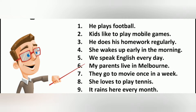Example one: 'He plays football.' He is third person singular, so we add -s to the verb play — plays. Example two: 'Kids like to play mobile games.' Kids is plural, so we don't add -s or -es to like. Example three: 'He does his homework regularly.' He is singular, so we add -es to do — does.